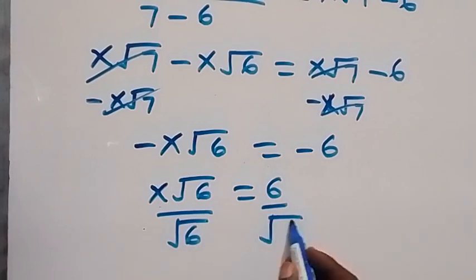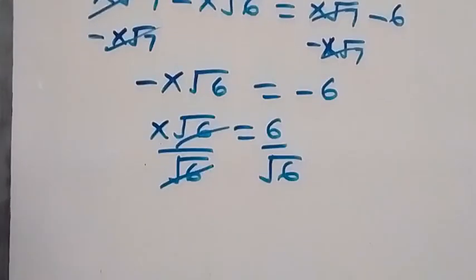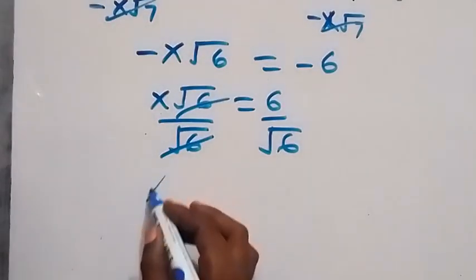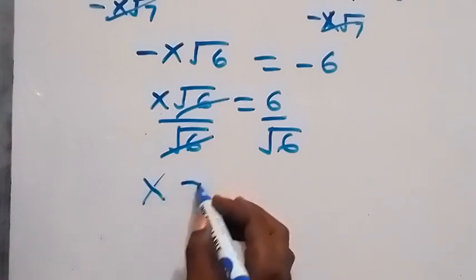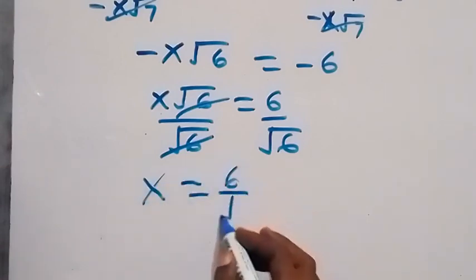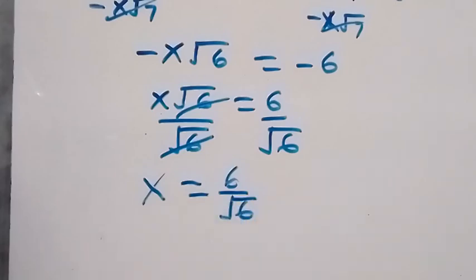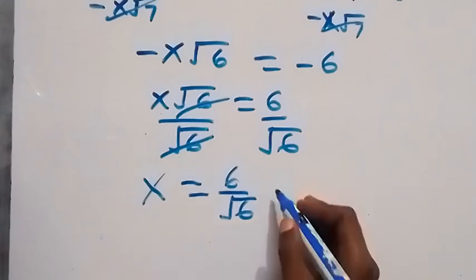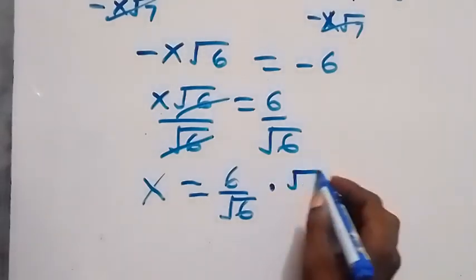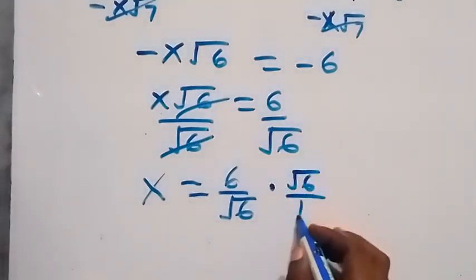So when we divide by root 6, root 6 cancels out on this side. Then this gives us x will be equal to 6 over root 6, and we can reduce this by also rationalizing the denominator, and we multiply by root 6 divided by root 6.